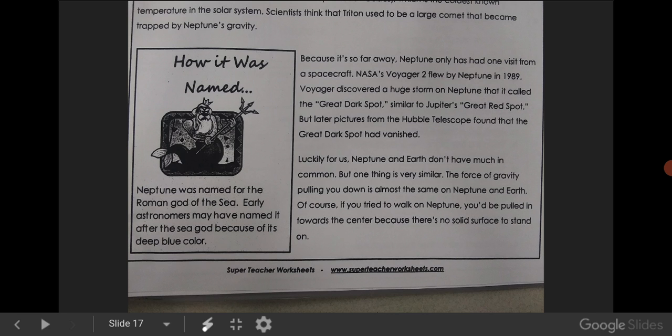Because it's so far away, Neptune only has one visit from a spacecraft. NASA's Voyager 2 flew by Neptune in 1989. Voyager discovered a huge storm on Neptune that is called the Great Dark Spot, similar to Jupiter's Great Red Spot. But later pictures from the Hubble telescope found that the Great Dark Spot had vanished.